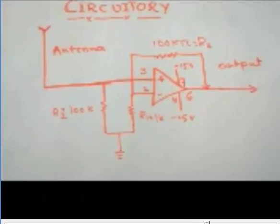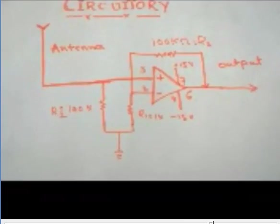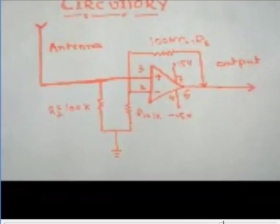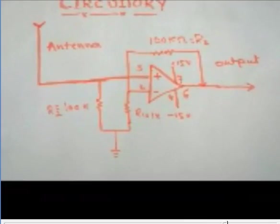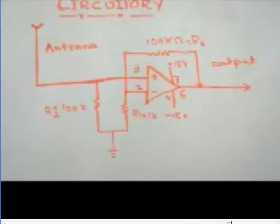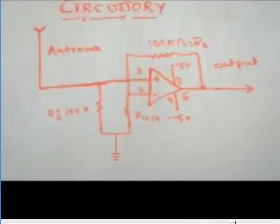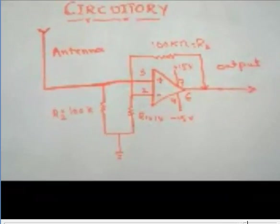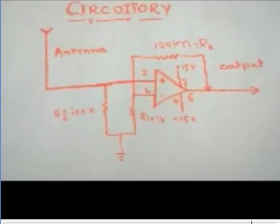Now take a wire 2.5 inches long and connect it to pin number 3 which is the non-inverting terminal of the op-amp. And your simple RF receiver circuit using 741 operational amplifier IC is ready.